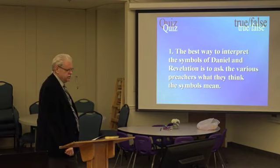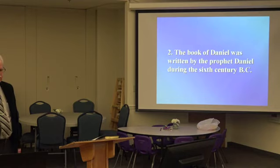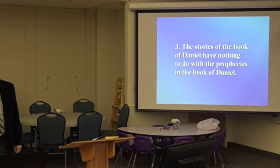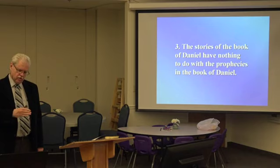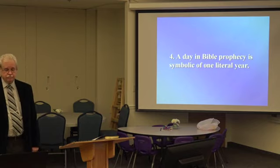Question one: The best way to interpret the symbols of Daniel and Revelation is to ask the various preachers what they think the symbols mean. True or false? Question two: The book of Daniel was written by the prophet Daniel during the 6th century B.C. True or false? Question three: The stories of the book of Daniel have nothing to do with the prophecies in the book of Daniel. True or false? Question four: A day in Bible prophecy is symbolic of one year — one literal year in reality. True or false?